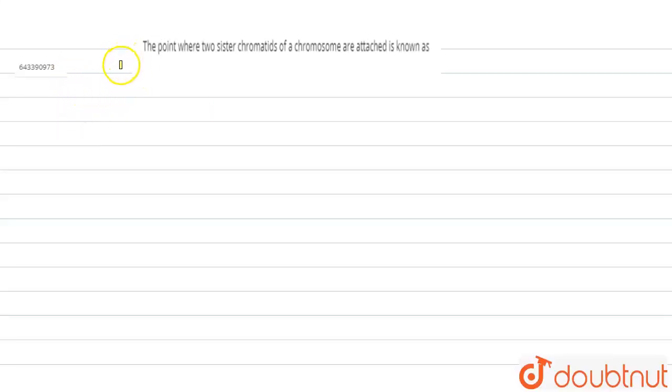will be fine. So today we have the question: the point where two sister chromatids of a chromosome are attached is known as? So, to understand this question and find the solution, we have to understand the structure of the chromosome.